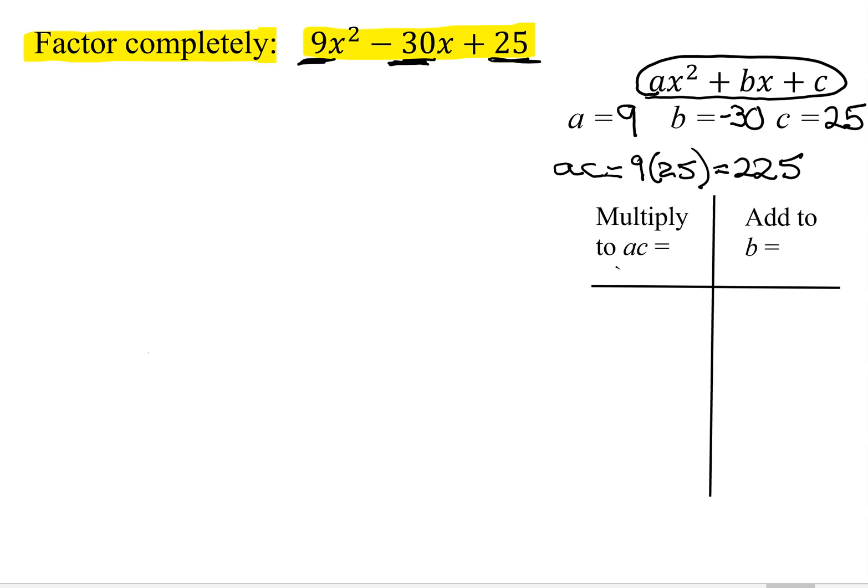So now I need two numbers that multiply to AC, which is 225, and they add to b that is negative 30. Now, since they multiply to a positive, it says the signs are the same. And since they add to a negative, both signs have to be negative.